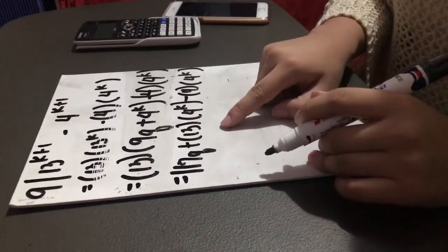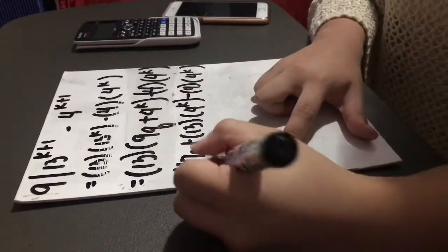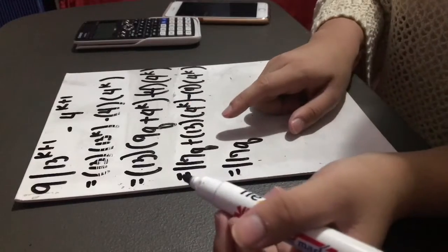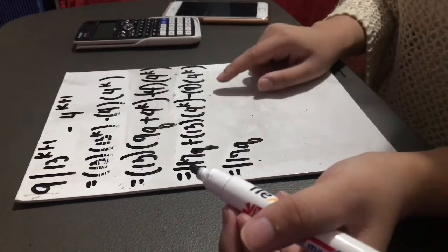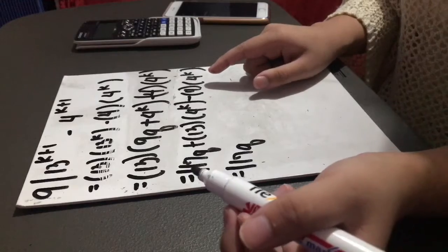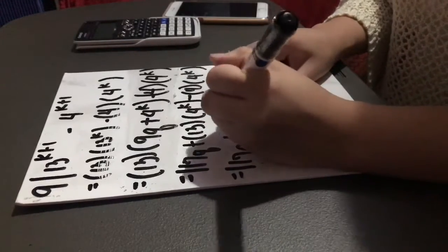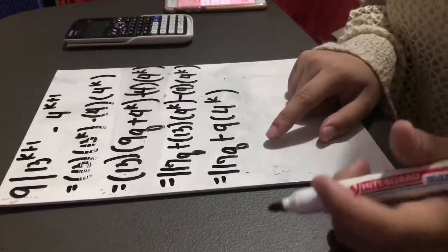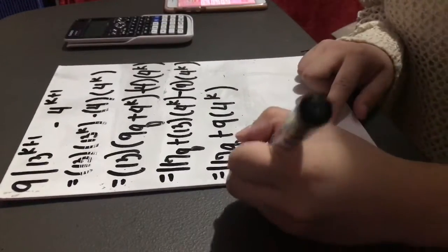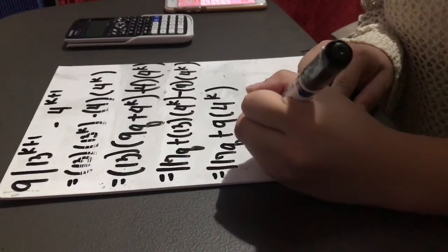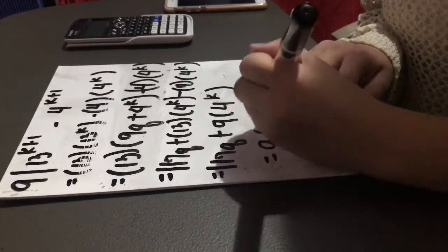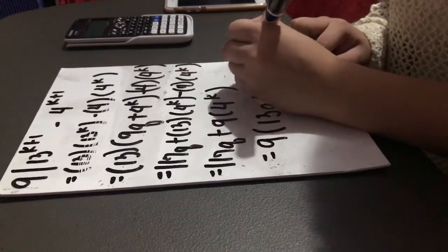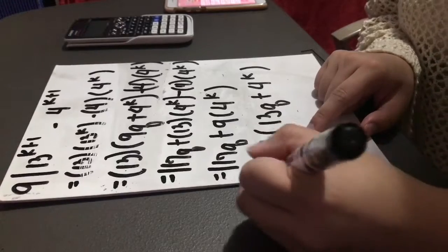Now we are going to combine like terms. We copy 117q, then plus 13 times 4 raised to k minus 4 times 4 raised to k, which simplifies to plus 9 times 4 raised to k. For it to be divisible by 9, we factor out 9, giving us 9 times (13q plus 4 raised to k). Therefore, it is divisible by 9.